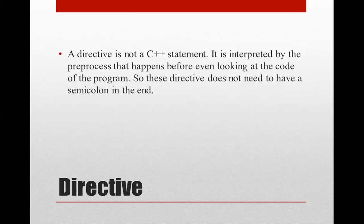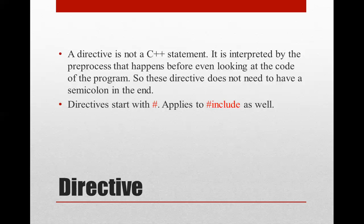A preprocessor directive is not a C++ statement — it is interpreted by the preprocessor before your source code is compiled. That is why there is no semicolon at the end: C++ is not responsible for identifying the preprocessor directive. #include is also a preprocessor directive — those commands are interpreted before compiling the program, which is why you don't see a semicolon at the end of #include either.